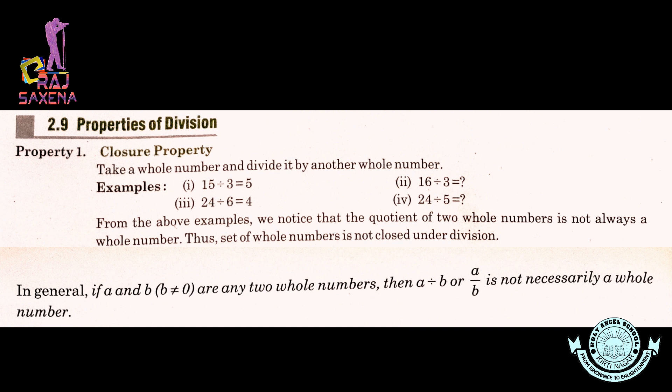Agar hum ek whole number lein aur usko kisi doosare whole number se divide karein, toh uska jo quotient aayega — means uska jo result aayega — woh hamesha whole number nahi hota hai. Quotient whole number ho bhi sakta hai aur nahi bhi ho sakta hai. So, the set of whole numbers is not closed under division.